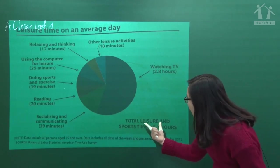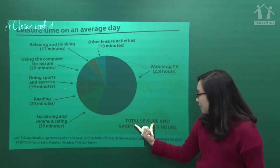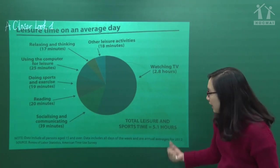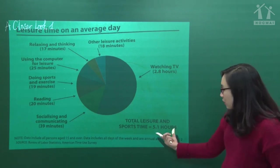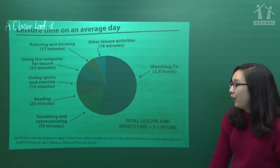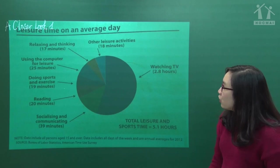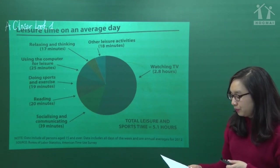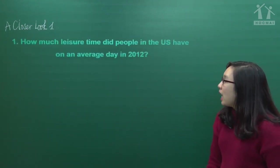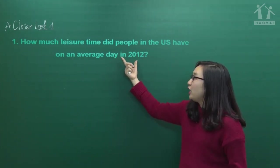The total leisure and sport time - tổng thời gian thư giãn và thể thao - of people here is 5.1 hours per day. Now we go to the questions. Question one: how much leisure time did people in the U.S. have on an average day in 2012?